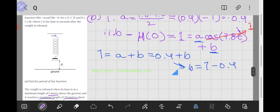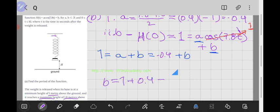So that when we evaluate for our function h at 0 for the y-intercept, we should instead have negative 0.4. So b is then equal to 1 plus 0.4, which is 1.4. And that is our answer for question ii.